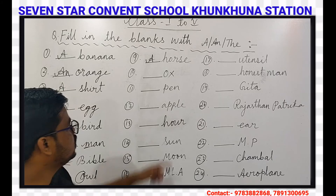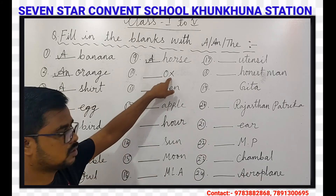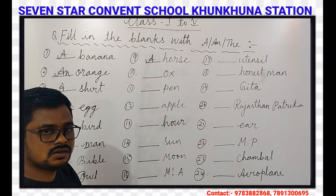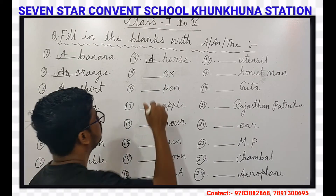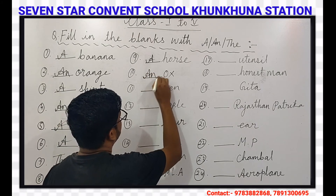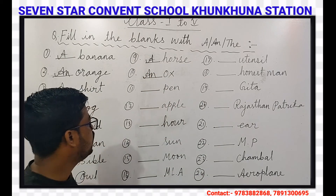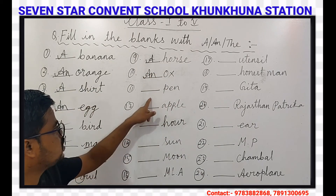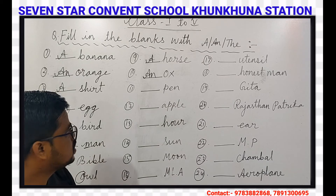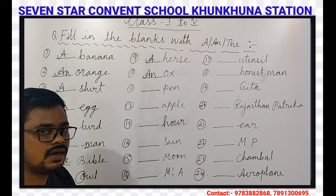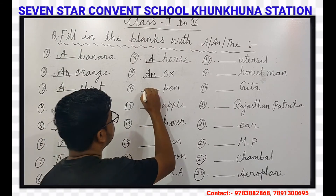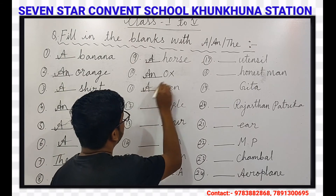Our next question is Ox. Ox's first letter is O, and O is a vowel, so AN will come here. Our next question is Pen. Pen's first letter P is a consonant, so A will come here.